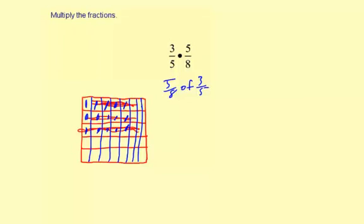So we have 1, 2, 3, 4, 5. We have 15 of those guys. And what's the division here? We have 1, 2, 3, 4, 5 by 1, 2, 3, 4, 5, 6, 7, 8. So 5 times 8 equals 40.